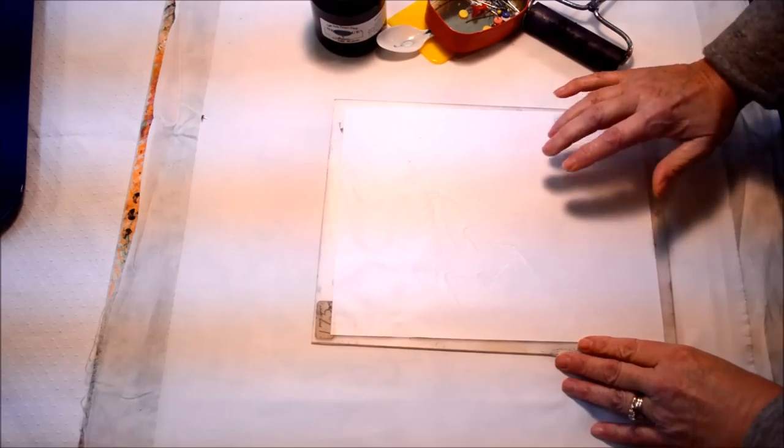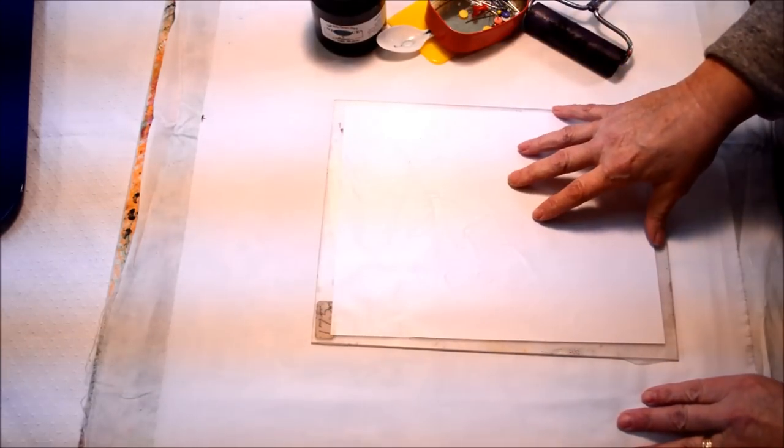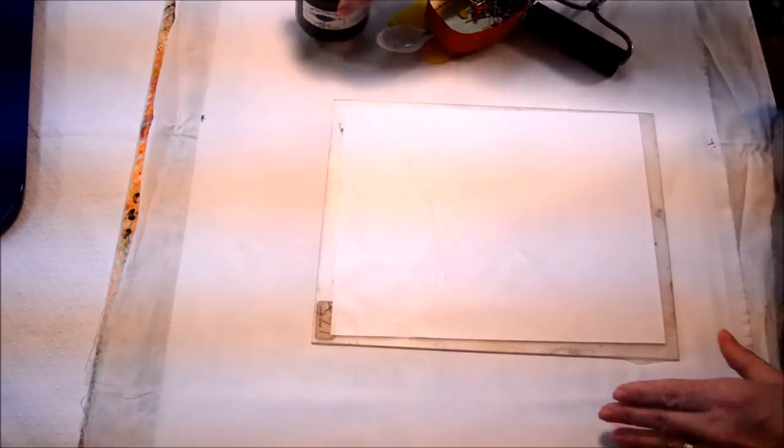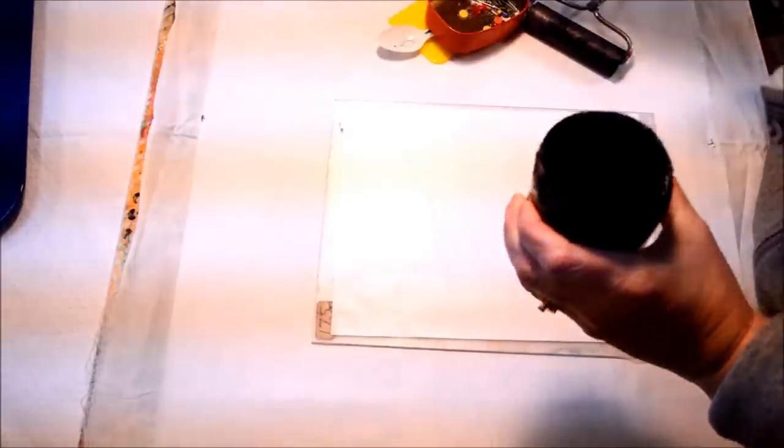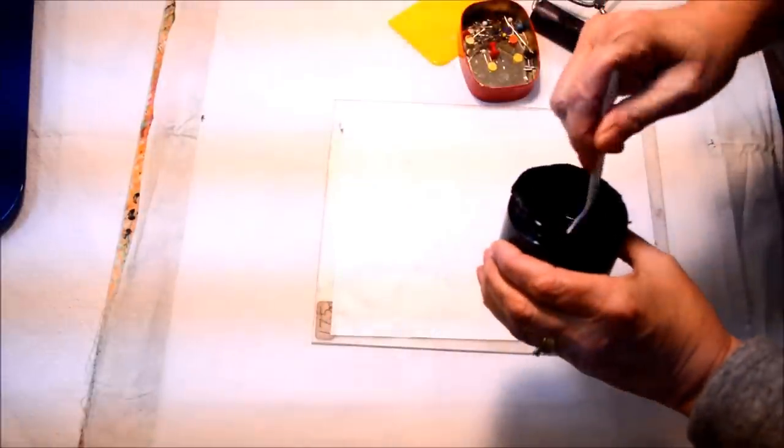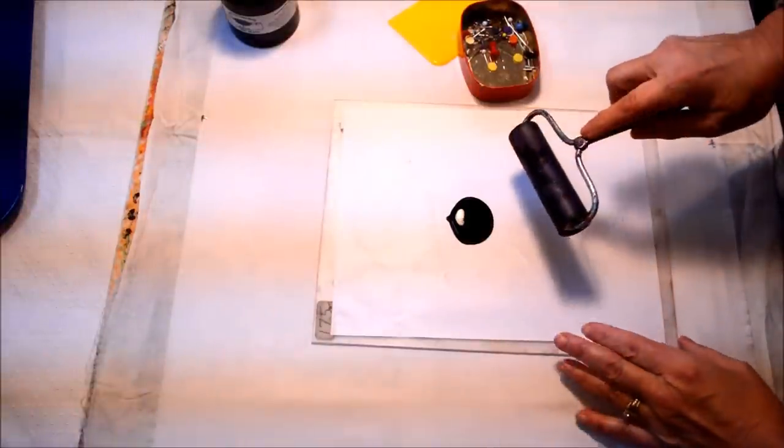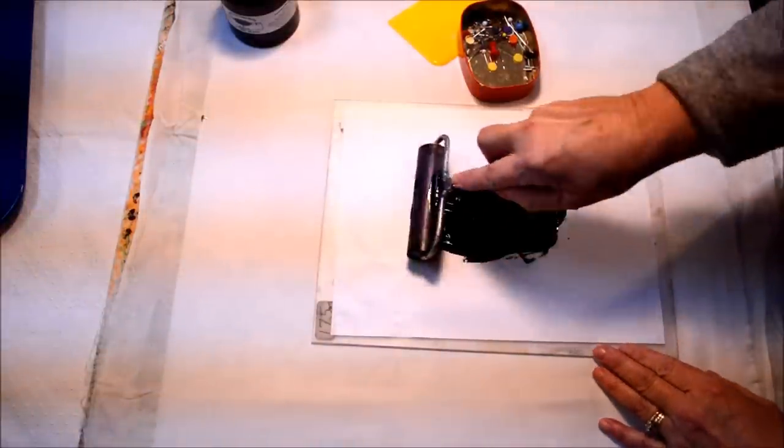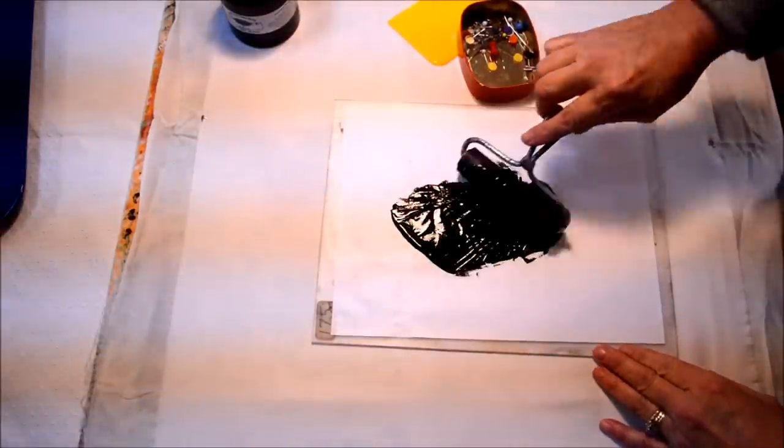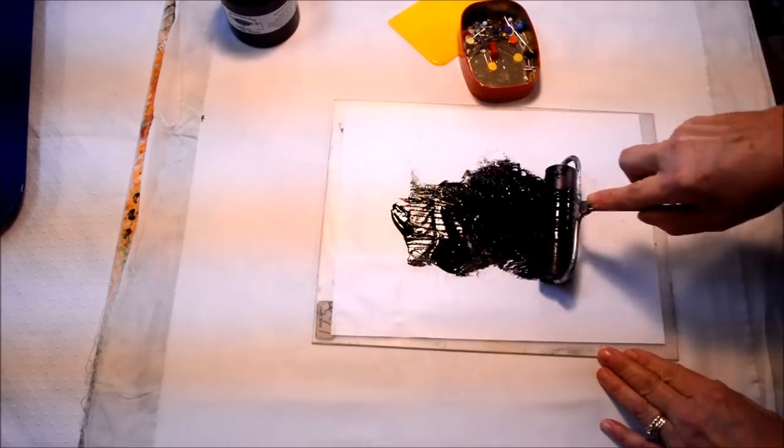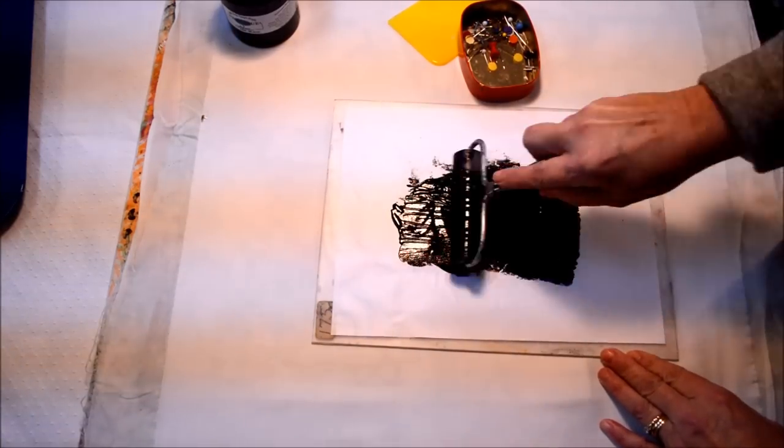Now I have the fabric pinned down to my print table. I have my palette here. I'm going to just spread about a teaspoon of paint out onto the palette, and then I use the brayer to spread the paint so that I can have an even application of paint onto the fabric.